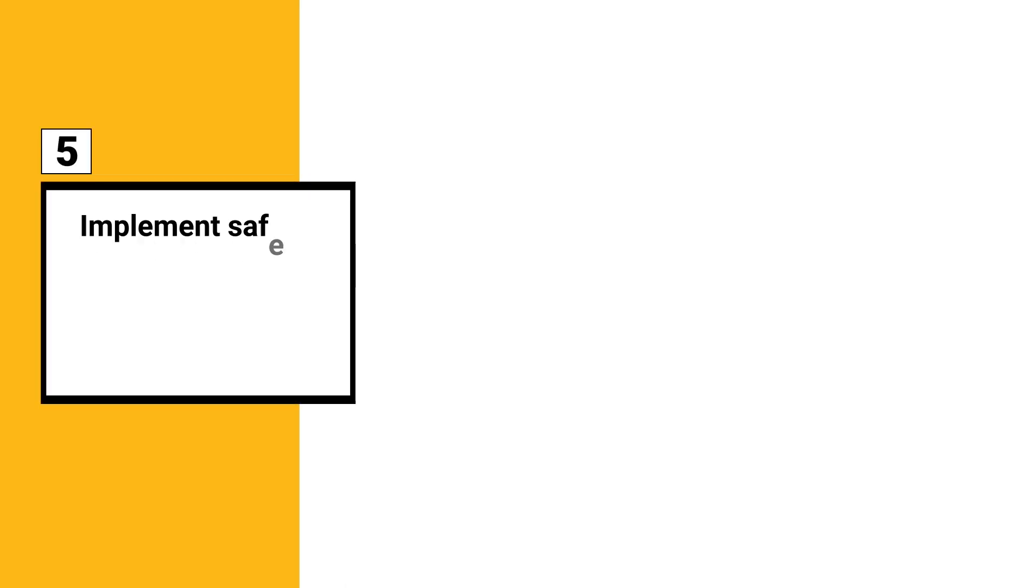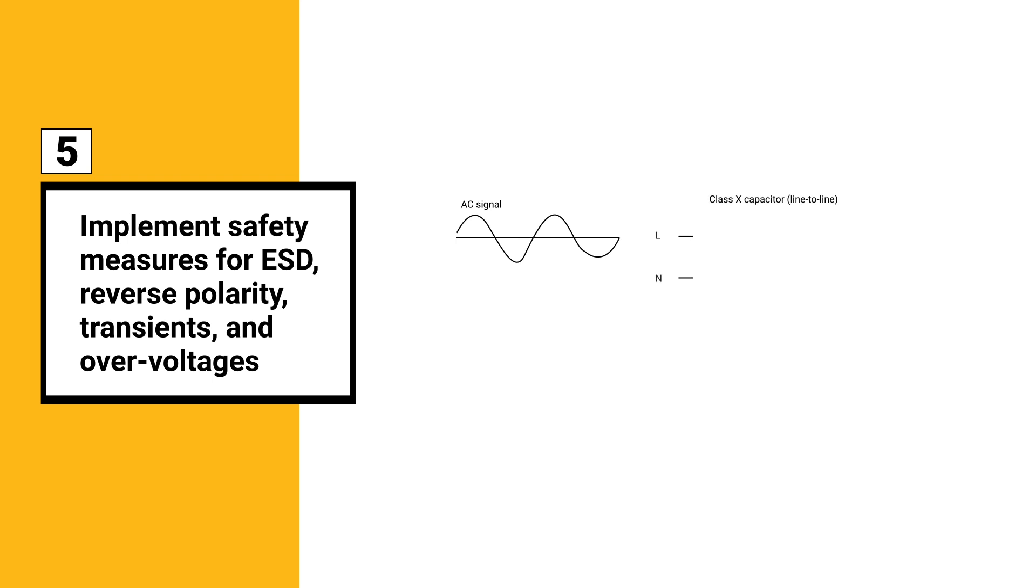Five: implement safety measures for ESD, reverse polarity, transients, and over voltages. Incorporate voltage limiters, power diodes, flyback diodes, class X and class Y capacitors to reduce the risk of electrostatic discharge, reverse polarity, transients, and over voltages.